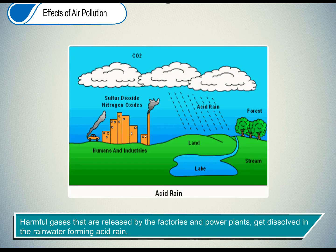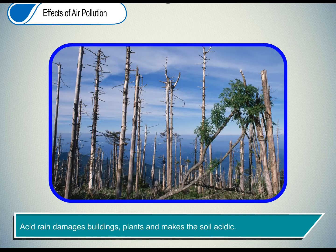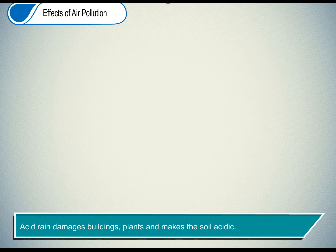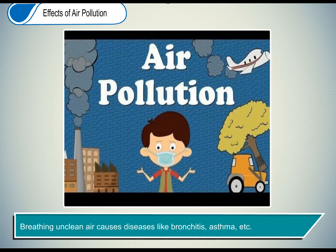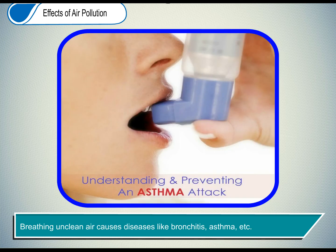Harmful gases that are released by the factories and power plants get dissolved in the rainwater, forming acid rain. Acid rain damages buildings and plants, and makes the soil acidic. Breathing unclean air causes diseases like bronchitis, asthma, etc.